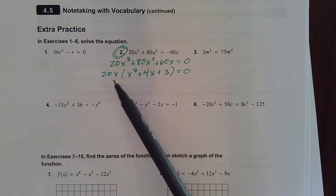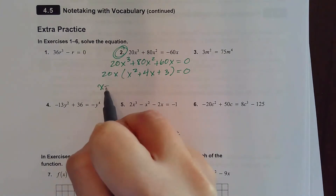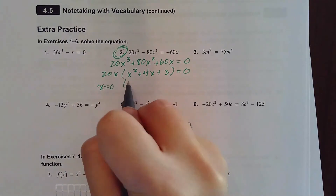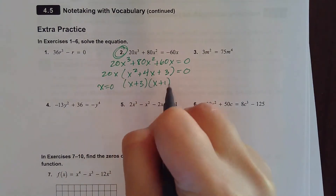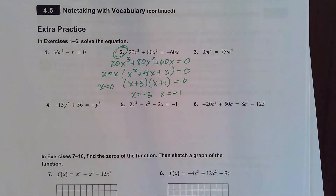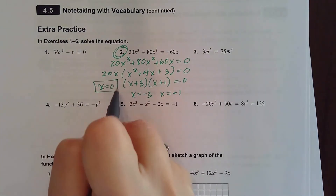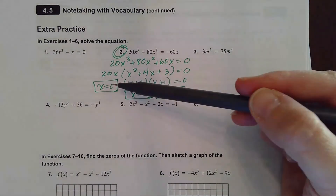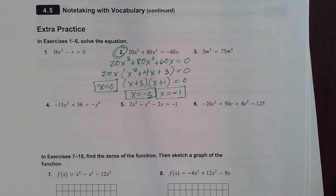Now you have a linear term and a quadratic term. From the linear term, set 20x equal to zero and get x equals zero. For the quadratic, you have choices: factor, use the quadratic formula, or complete the square. Factoring gives solutions x equals zero, x equals negative 3, and x equals negative 1. This was a third-degree polynomial, so I should find three total solutions — and I did.